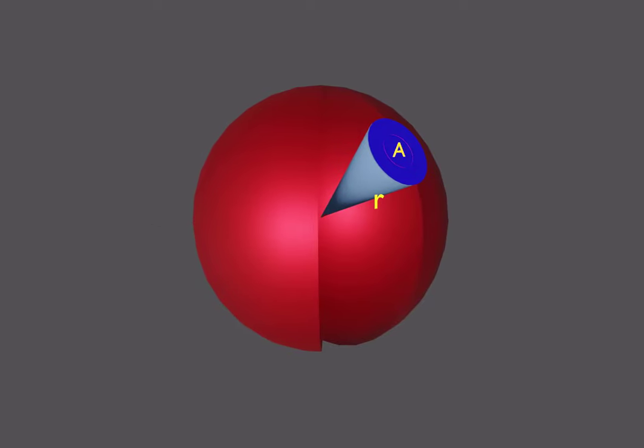In summary, solid angle is a dimensionless quantity subtended by a surface in the form of a cone-like spread, and its SI unit is steradian.